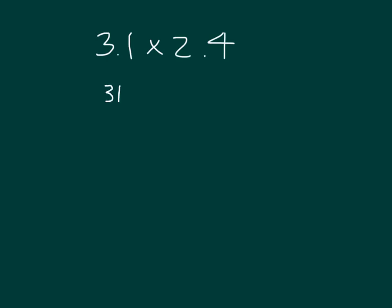That's 31 tenths times 24 tenths. Before we work this problem out, let's estimate what our product should be close to. 3.1 is close to 3, and 2.4 is close to 2. So 3 times 2 is 6, so our answer should be around 6.